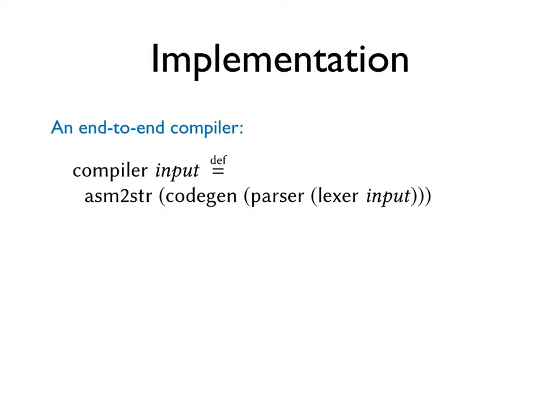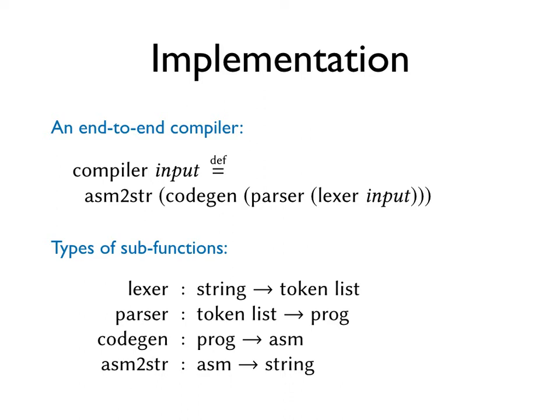Implementation. Here is the top-level function implementing an end-to-end compiler. The sub-functions are a lexer that turns a string into a list of tokens, a parser that turns a list of tokens into a source program PROG. Then we have a code generator which, given a source program, returns an assembly program. Finally, the asm-to-string function converts the assembly program into concrete syntax that an off-the-shelf assembler will understand.